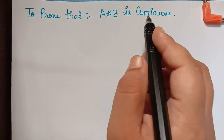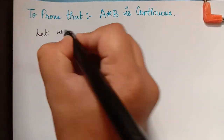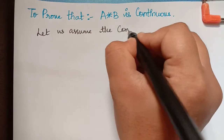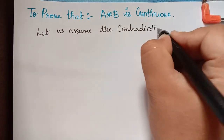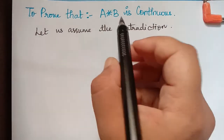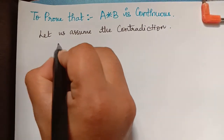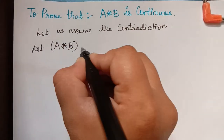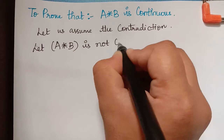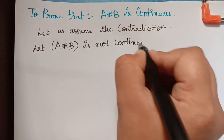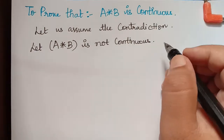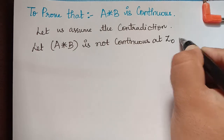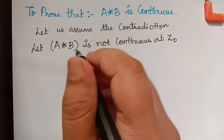To prove that a★b is continuous, let us assume the contradiction — that is, we are going to assume that a★b is not continuous. In particular, we can assume that a★b is not continuous at the point z₀.